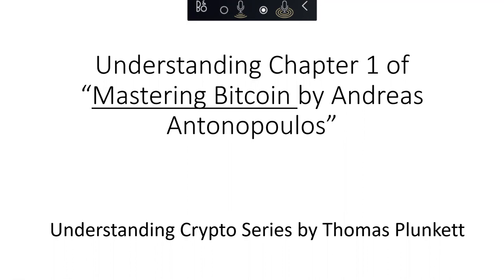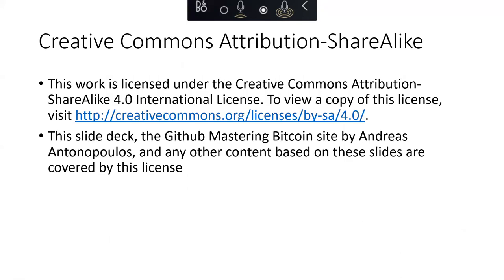Hi, I'm Thomas Blankett, and this episode is part of the Understanding Crypto series. I'm going to focus on understanding Chapter 1 of Mastering Bitcoin by Andreas Antonopoulos. This is a great textbook, which you can find for free on GitHub at github.com/bitcoinbook. It's made available under a Creative Commons attribution license, and this video and the slide deck I'm sharing are also made available under that same license.